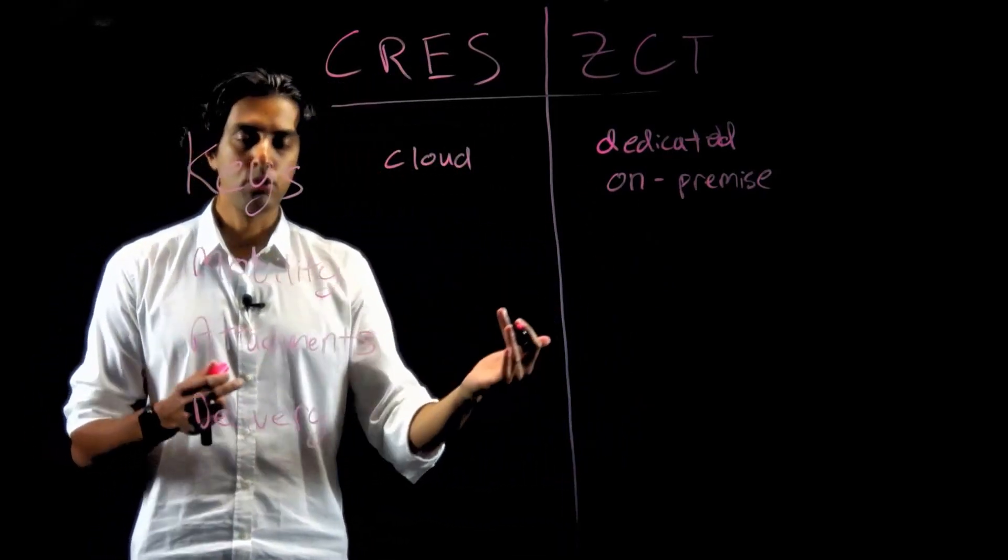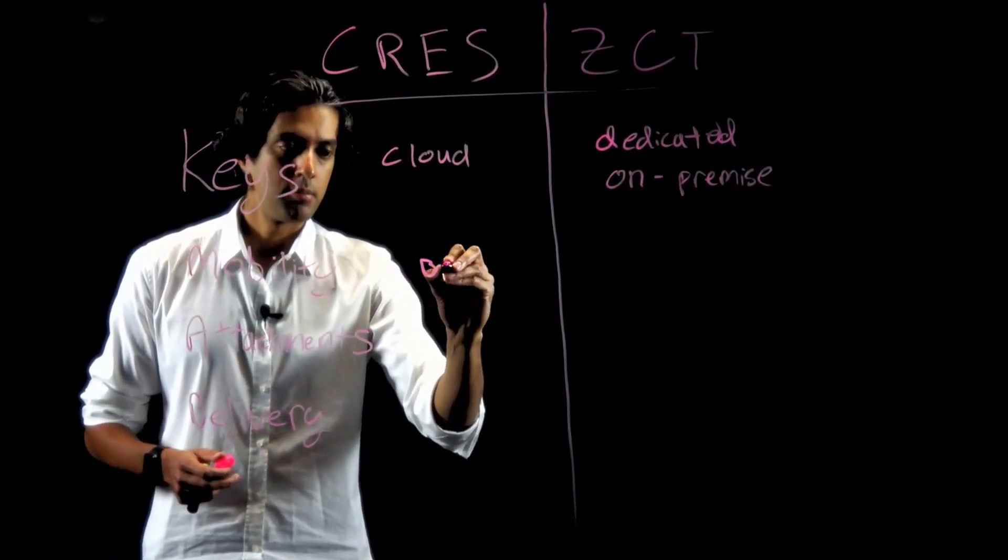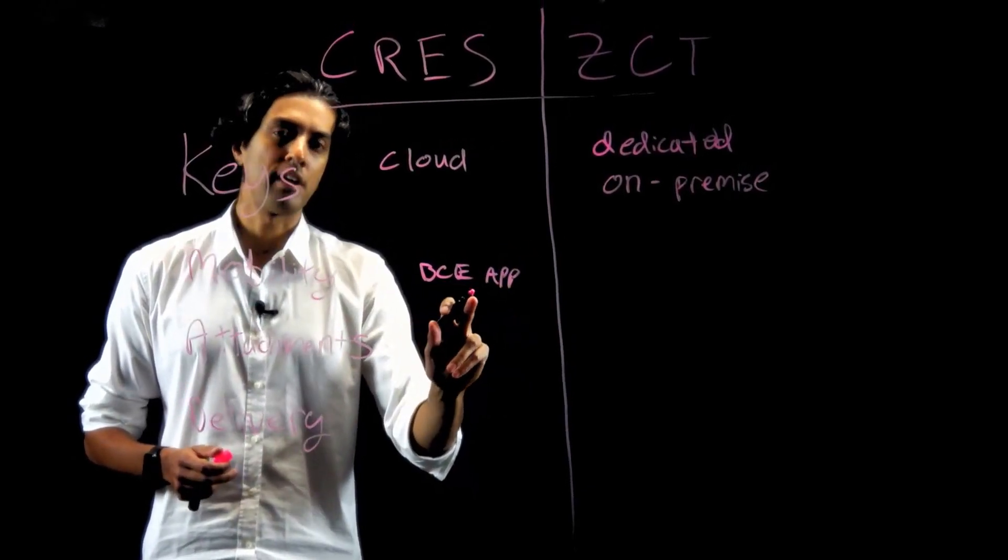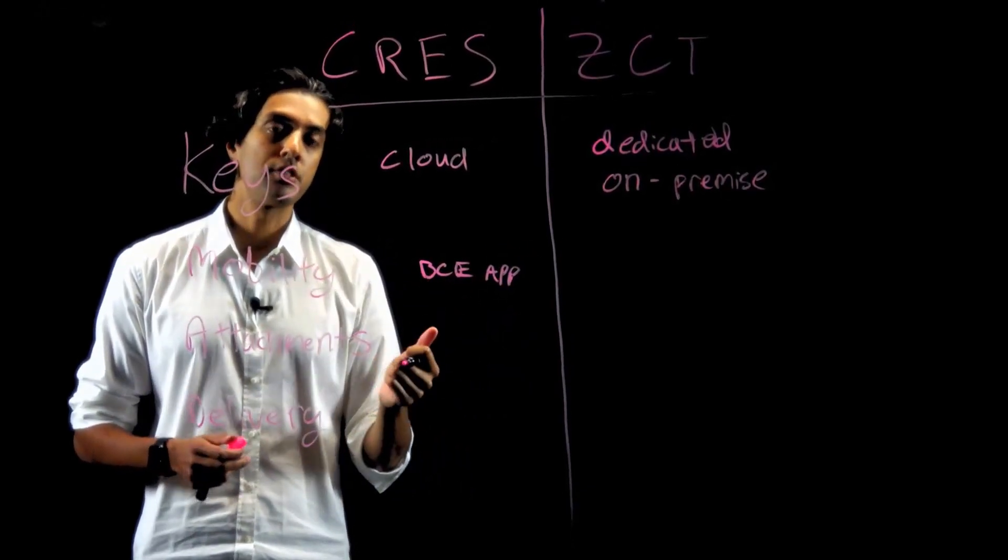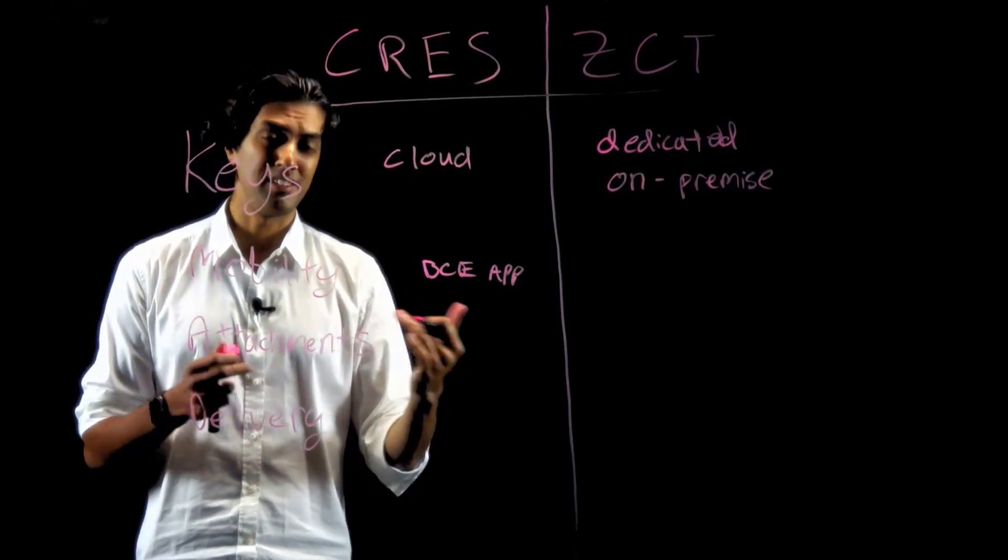On the mobility front, both solutions handle mobile devices. CRES has a BCE app. This is an app that supports Android and iOS and allows recipients to view encrypted messages on their devices without any additional steps.